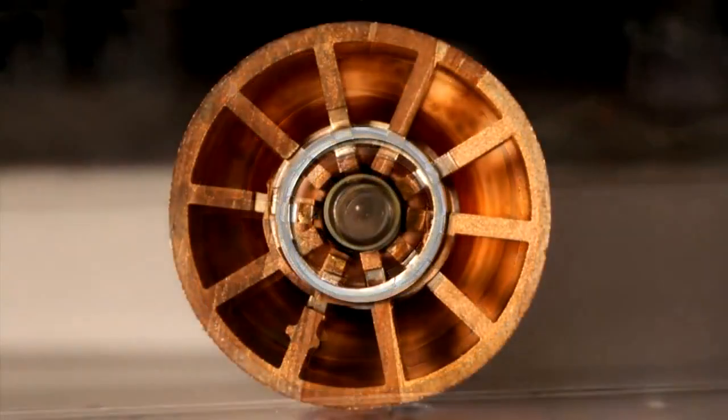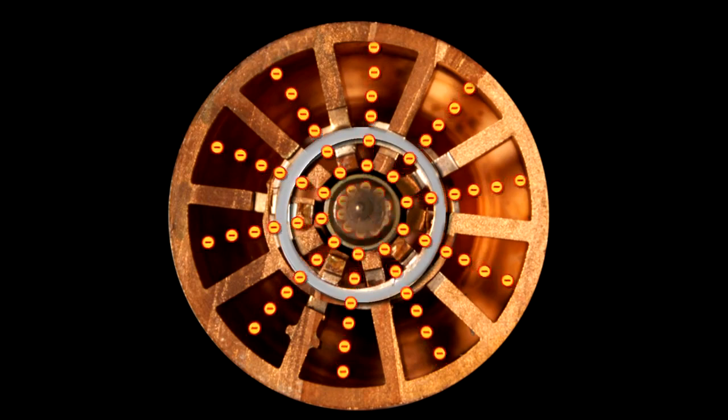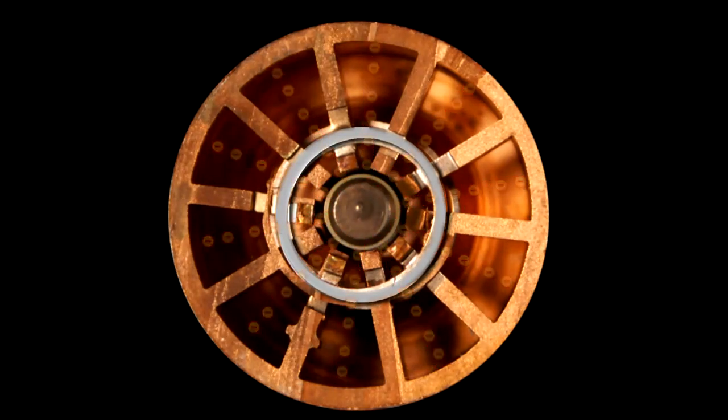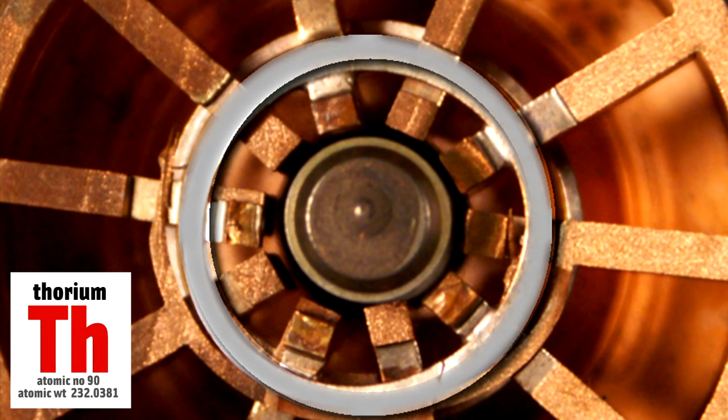You apply a large voltage across both the inner filament and the circular copper outside. This voltage boils electrons off the center filament, and they fly toward the circular copper section. The filament is made from tungsten and thorium—tungsten because it can withstand high temperatures, and thorium because it's a good source of electrons.